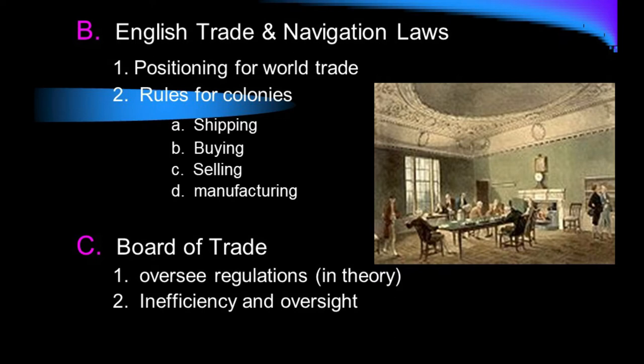For example, if Americans wanted a shipload of wine from France, a French ship could not sail directly into an American port. That French ship would have to sail into a British port, pay a port tax, offload its goods, which would then be loaded onto a British ship to be taken across the Atlantic to the colonies. If America had an item Britain didn't need, they could send those goods to whichever country was buying, as long as it was in a ship flying the British flag. The colonies were also occupied in shipbuilding, but each ship, whether built in America or Britain, would fly the British flag.